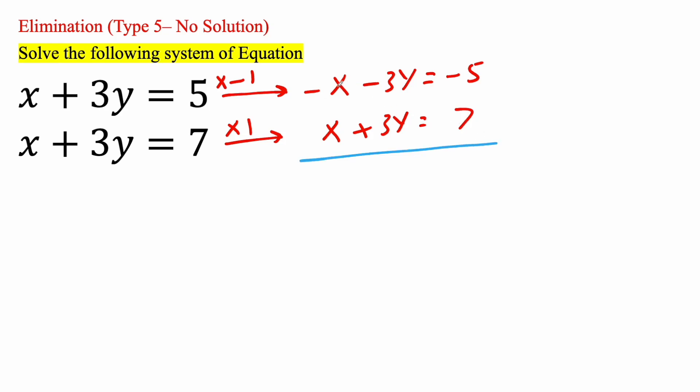And so now we'll combine. Negative x plus x is 0, it gets eliminated. Negative 3y plus 3y, it gets eliminated. So we get 0 is equal to negative 5 plus 7 is 2.